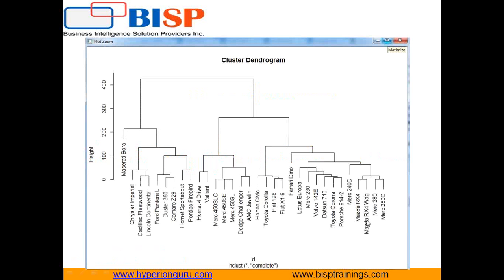As you can see, I have placed my data using a dendrogram chart after proper clustering. A cluster is a group of objects that belong to the same class — similar objects are grouped into one cluster and dissimilar objects into another. For example, Fiat X19 and Fiat 128 belong to the same group, while Ford and Trial belong to different groups.